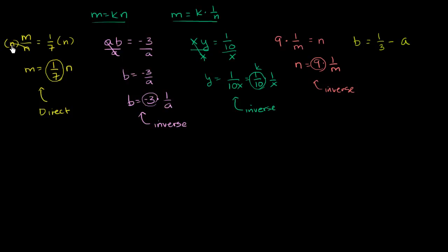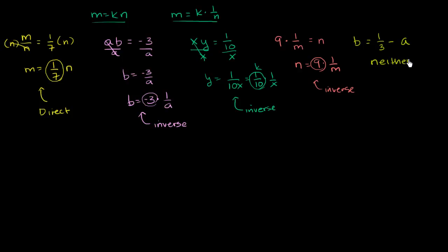This next expression is a trickier one, because the variables are already separated on both sides. If this was b equals 1/3 times a, then we would have direct variation — b would vary directly with a. But in this case we have 1/3 minus a. And it actually turns out that this is neither direct nor inverse variation.